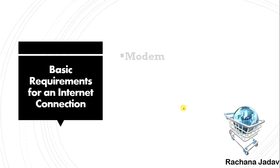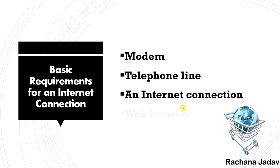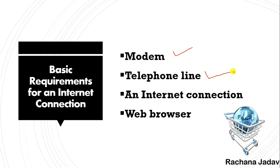Now, basic requirements for an internet connection: modem, telephone line, internet connection, and web browser. Nowadays we don't need all of these. But there was a time when if you worked on a desktop you needed a modem and a telephone line. Now we don't need a telephone line — WiFi connectivity is available.